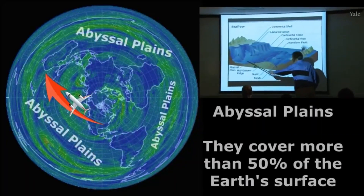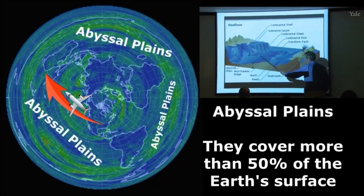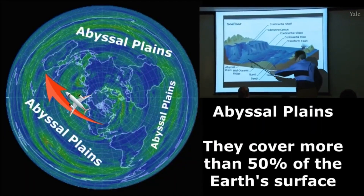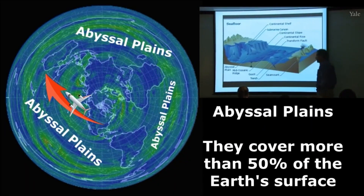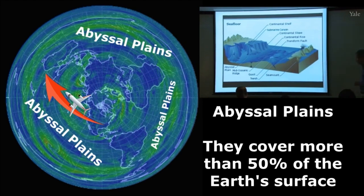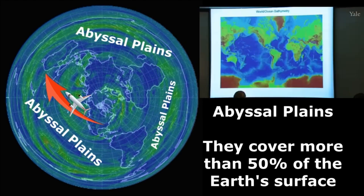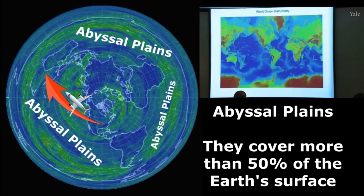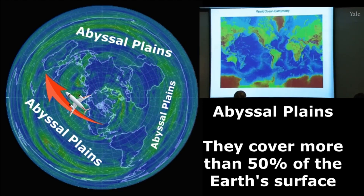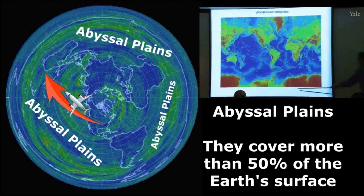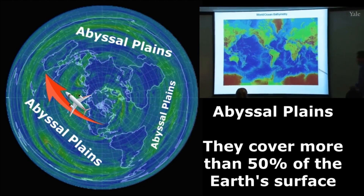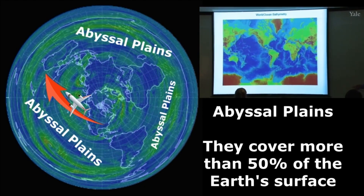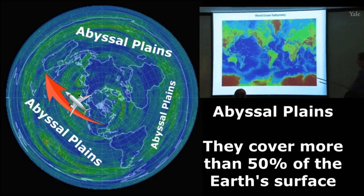There's a section of abyssal plain, a kind of flat lying section. So now here's the whole world ocean — the color scheme is not quantified here, but I can tell you basically what's going on.